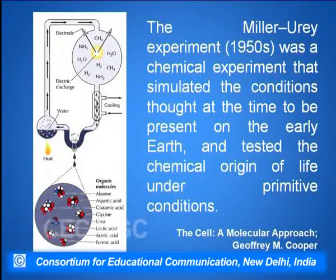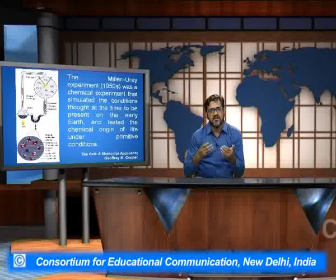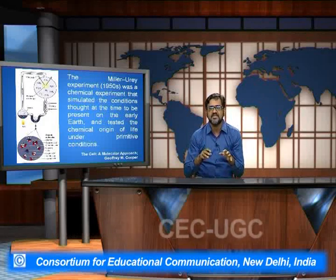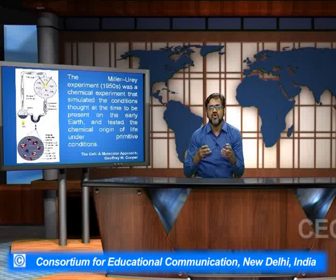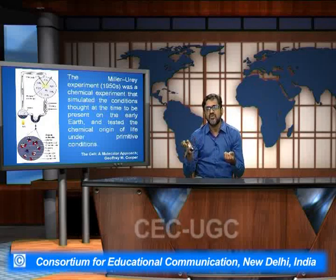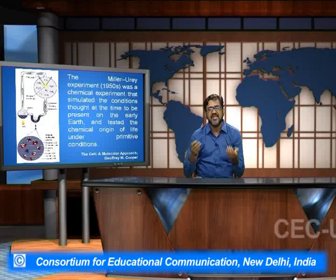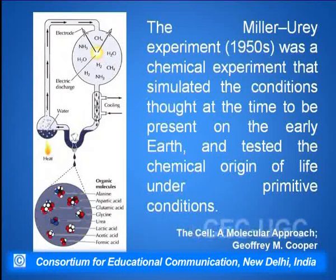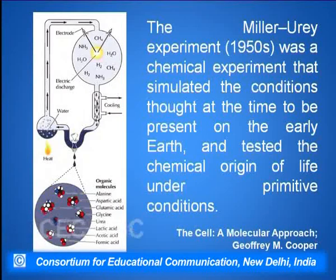The Miller-Urey experiment was a chemical experiment that simulated the conditions thought to be present on the early Earth and tested the chemical origin of life under primitive conditions. They created a chamber in which the primitive Earth condition was created, which had a high methane content, low carbon dioxide content, and various gases. Water vapors were created and through the help of an electric spark they formed certain macromolecules. It is thought that these macromolecules were the ones initially created and gave rise to subsequent development of the first cell.